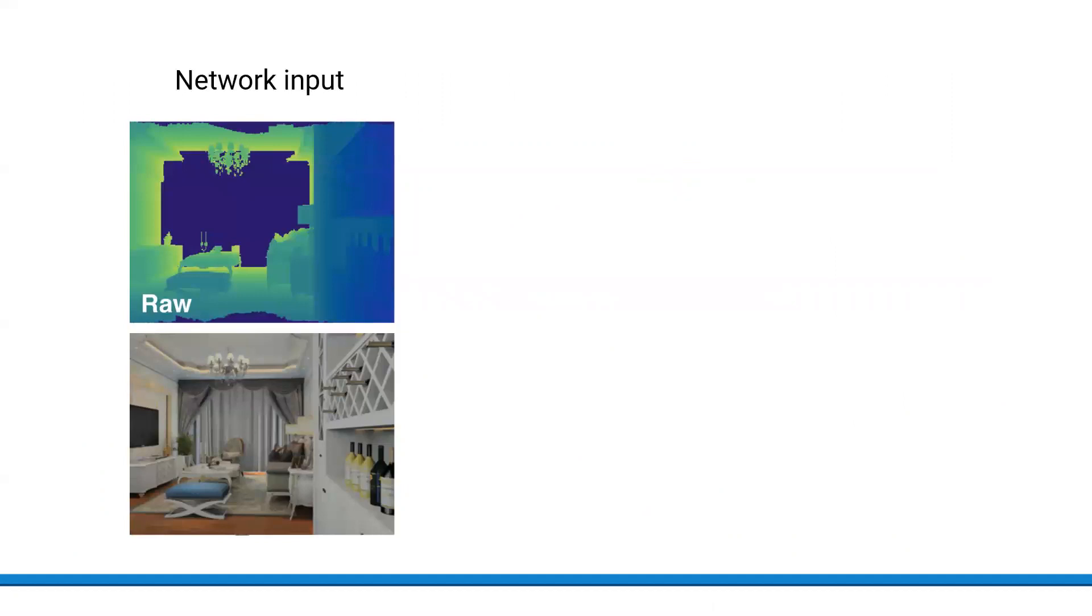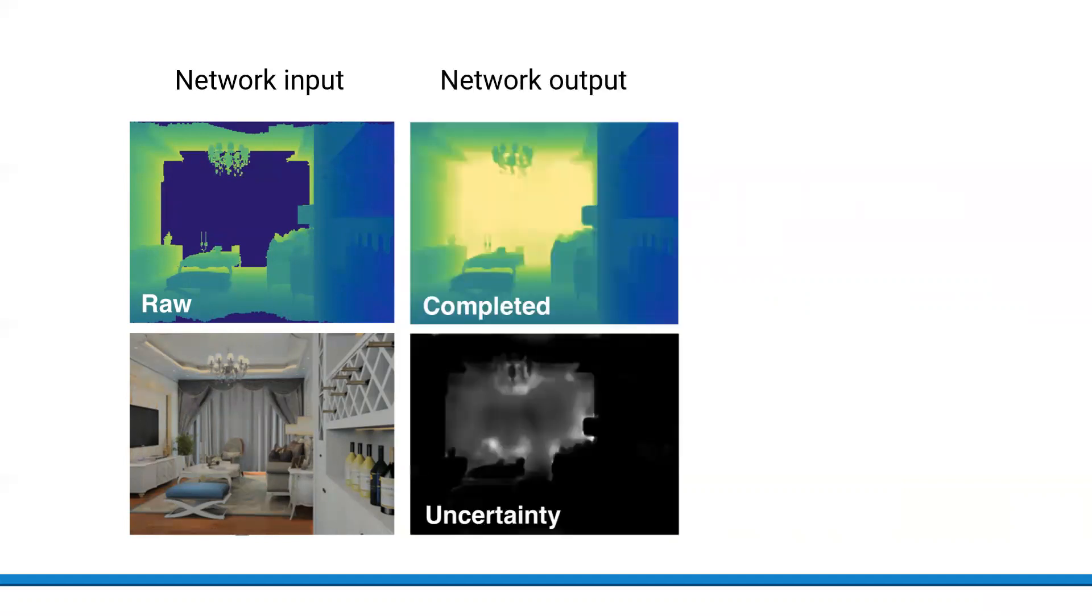We develop our input for occupancy mapping with probabilistic depth completion as follows. Here we see example raw depth and RGB image which serve as inputs to our network. Our network predicts the completed depth and the depth uncertainty. It can be seen that our network yields consistent uncertainty estimates as the wider areas of high uncertainty match the areas of missing depth.